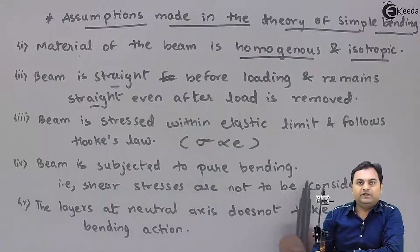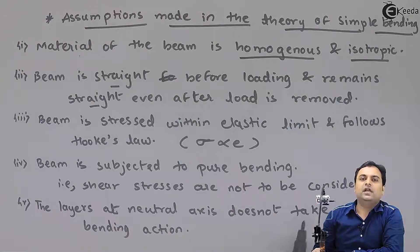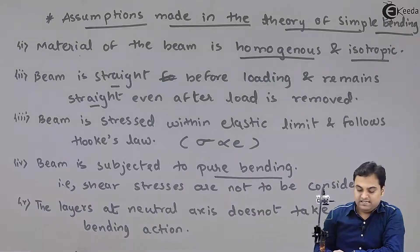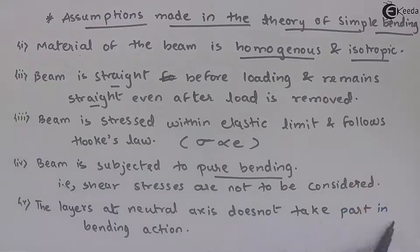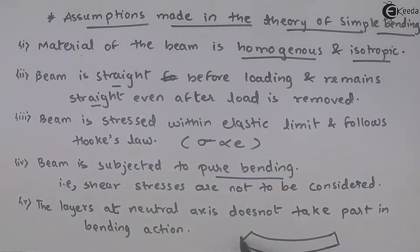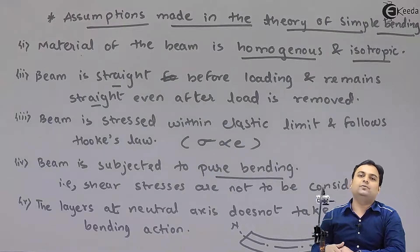The fourth assumption: beam is subjected to pure bending — means shear stresses are not to be considered. Load ki wajah se beam shear bhi ho sakta hai, lekin us shearing action ko hum consider nahi kar rahe hain. We are interested only in the bending of the beam — that is pure bending. The last assumption: the layers at the neutral axis do not take part in bending action. Neutral axis is the center line of bending. The layers there are not bending, and their cross-section before and after bending remains the same.